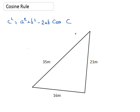If I'm trying to find out an angle, I need to rearrange this formula. I'm going to take the whole of that subtraction over to the other side, so I end up with c² + 2ab cos C = a² + b².